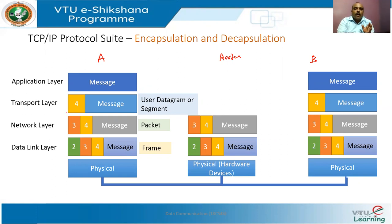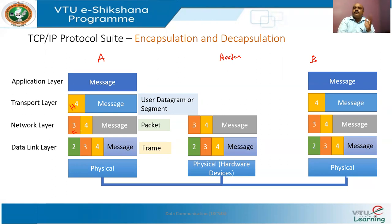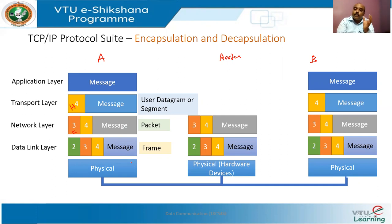In the network layer, the data from the transport layer — message plus header — is taken as one chunk, split into smaller pieces, and a new header is added. Similarly, the data link layer breaks that into even smaller pieces and adds its own header. So in total, three headers have been added as data moves down through the layers.